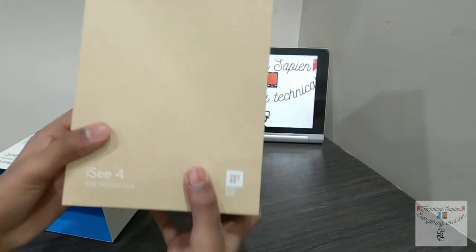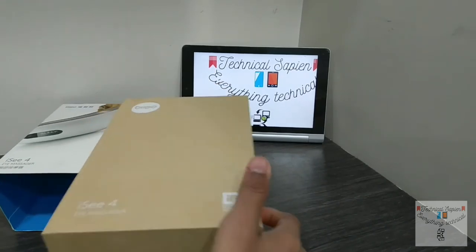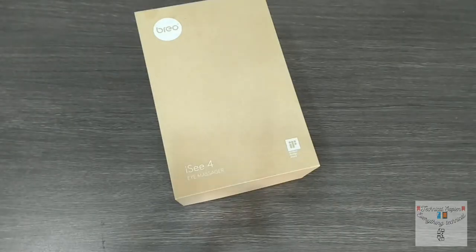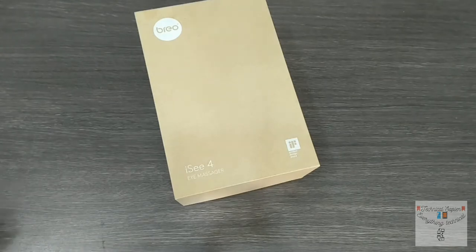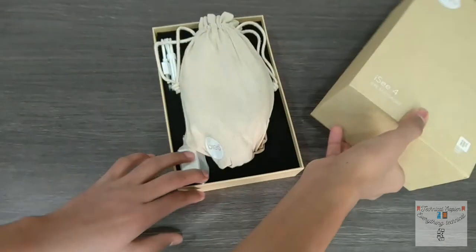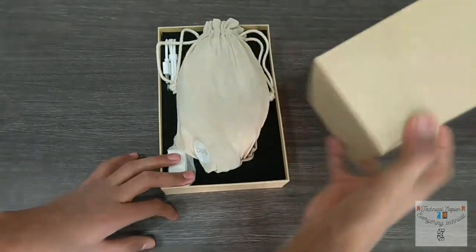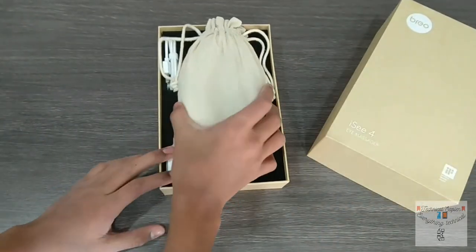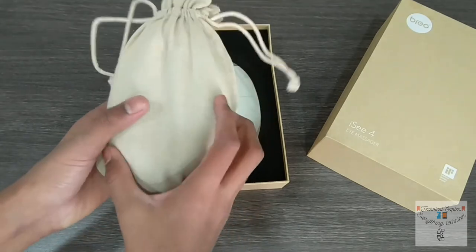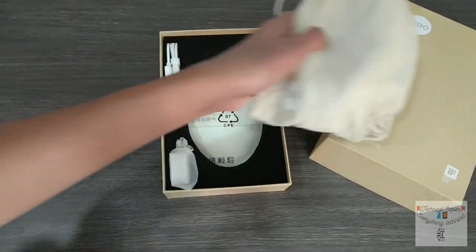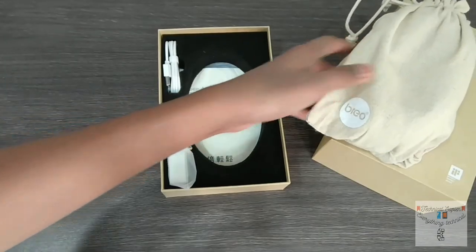IC4 Eye Massager written. Now let's just quickly start our unboxing. If we remove the box there's a nice foam packaging like this, and here this is our gadget which is in a very good travel jute bag.